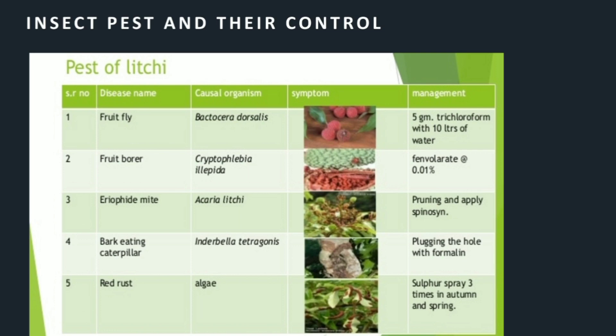Insect pests and their control: First, fruit fly — causal organism is Bactrocera dorsalis; management: 5 gram trichlorfon with 10 litres of water. Second, fruit borer — causal organism is Cryptophlebia ombrodelta; management: Fenvalerate at the rate of 0.01%. Third, eriophyte mite — causal organism: Aceria litchi; management: pruning and apply Spirodiclofen.